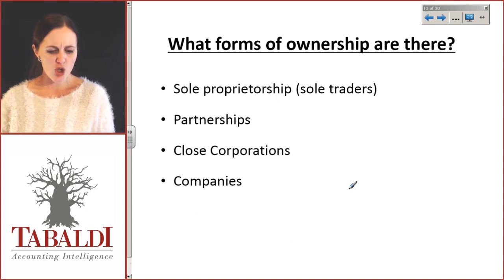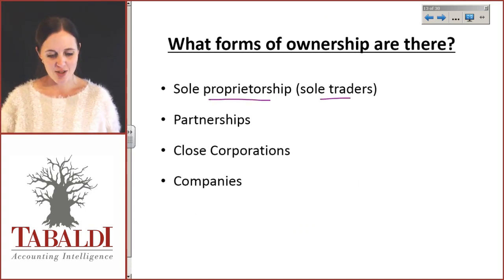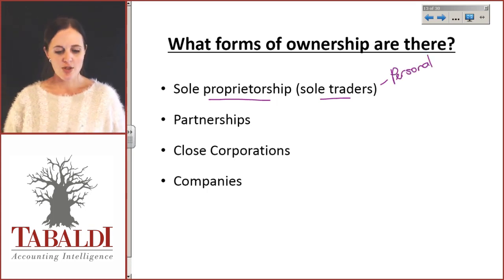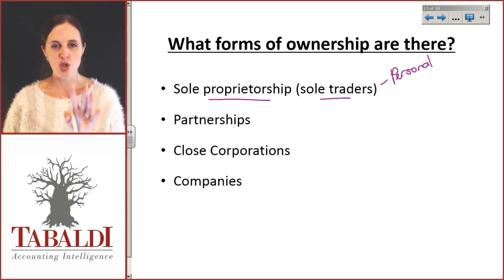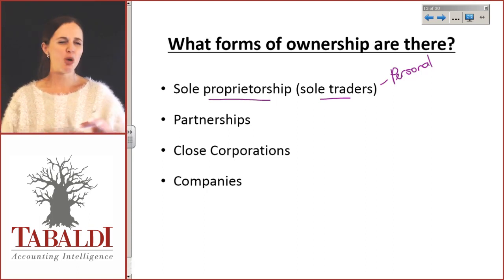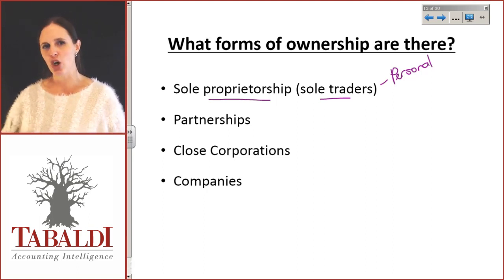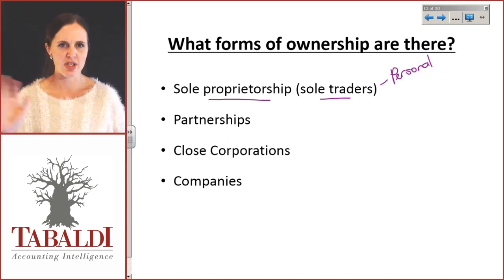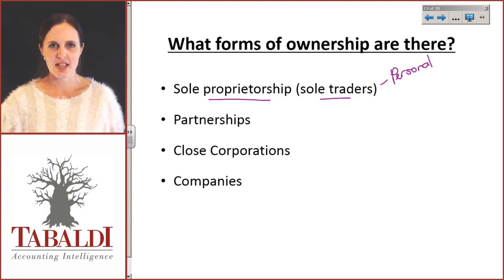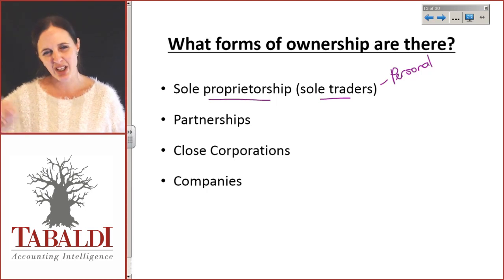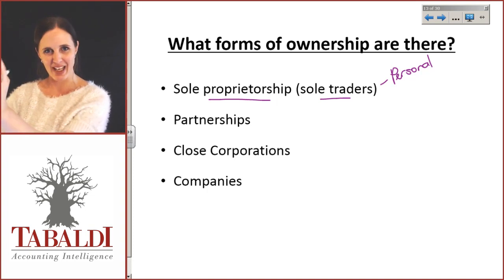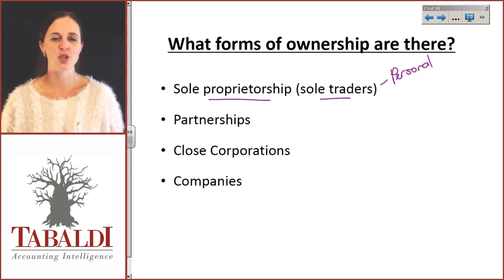Forms of ownership: first, sole proprietorship, also known as sole traders — this is you operating in your personal capacity. For example, while you're a student, you decide to make money selling coffee to fellow students. You're not opening a formal company, but you buy coffee and sell it to your friends for a bit extra — you make a profit. You're creating a little business on the side. Because you're doing it in your personal capacity, it is not a separate legal business, but it is a separate entity because you can measure its results separately. That would be called a sole prop.